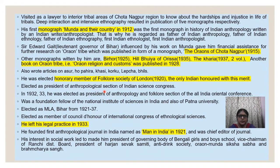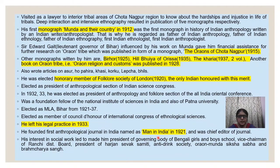He was elected as president of the Anthropological Section of the Indian Science Congress. In 1932-33, he was elected as president of the Anthropology and Folklore Section of the All India Oriental Conference. He was a foundation fellow of the National Institute of Sciences in India and also of Patna University. He was elected as MLA Bihar from 1921 to 1937, and was elected as a member of the council of the International Congress of Ethnological Sciences. He left his legal practice in 1933 and became an anthropologist, and he founded the first anthropological journal, Man in India, in 1921, of which he was the chief editor.